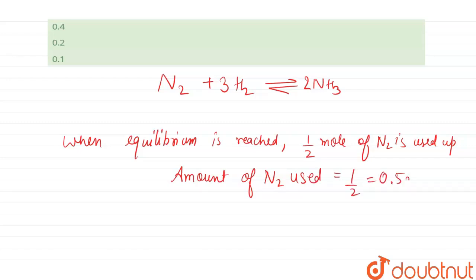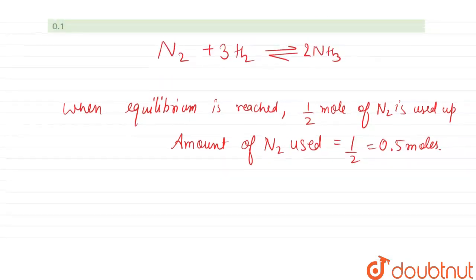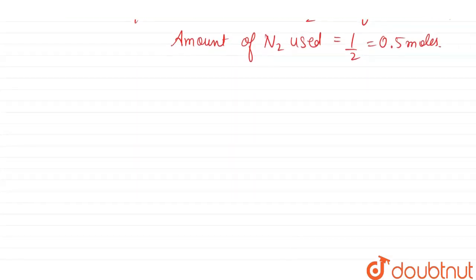So amount of NH3 produced: from one mole of N2—as you can see from one mole of N2 we get two moles of NH3.